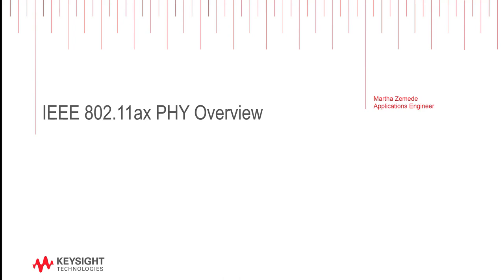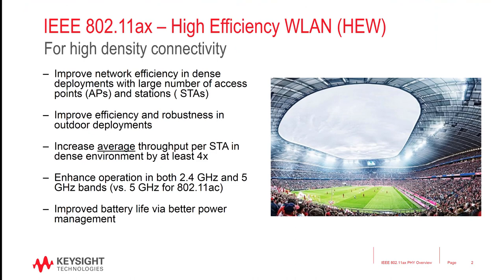Hello, and welcome to a quick introduction to the IEEE 802.11ax wireless LAN standard. 802.11ax, also known as high-efficiency wireless LAN, is all about improving network efficiency and end-user experience, especially for dense deployment scenarios in both indoor and outdoor environments. Because it's not focused on peak data rate, 802.11ax will operate in both 2.4 and 5 GHz frequency bands.